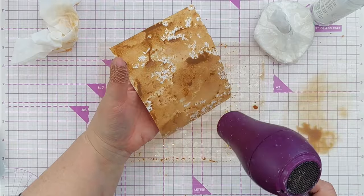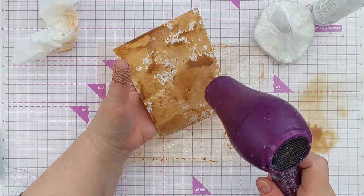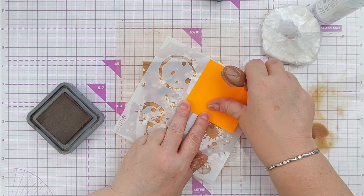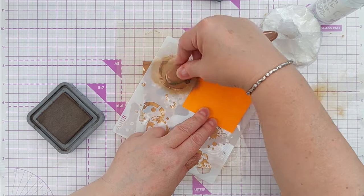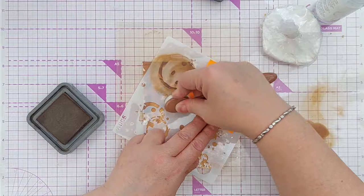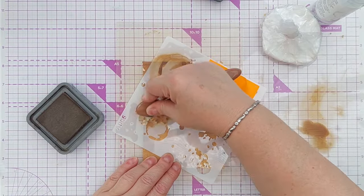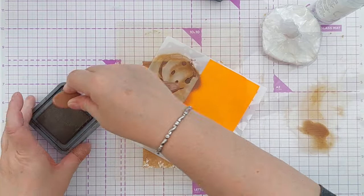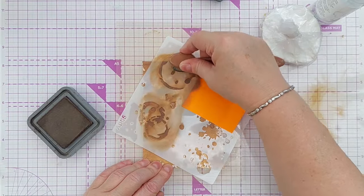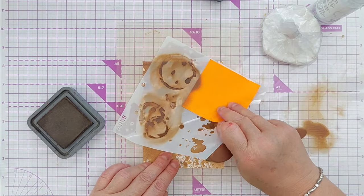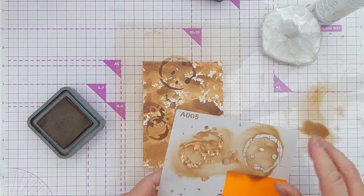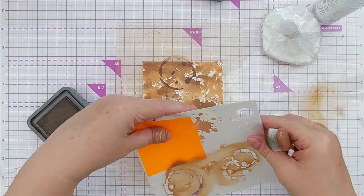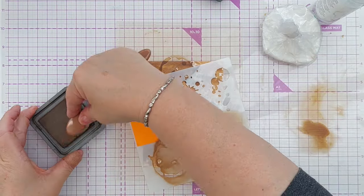Next I dried that with my hairdryer and brought out my stencils. I wanted the stenciling to stand out against all that smushing. So I used walnut stain for that, the darker of the two brown distress oxides that I've got. And when adding the rings, I made sure to get a good distribution all over the piece of mixed media paper.